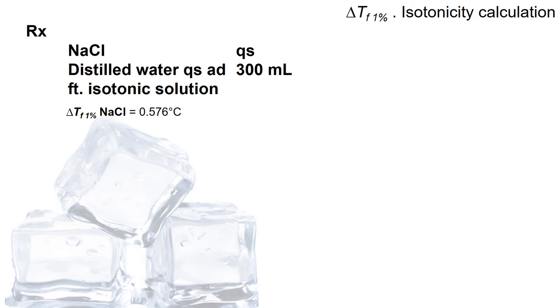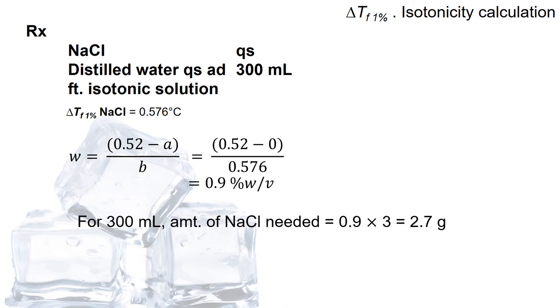First, we look at this simple example. We have to prepare 300 mL of an isotonic sodium chloride solution. Given that the freezing point depression value for 1% of sodium chloride is 0.576. By using the equation, we can substitute the value inside. Since there is nothing present, so the a remains 0. For b, the things added to adjust, which is the sodium chloride, so we substitute with the freezing point depression value, and you will get 0.9%. And bear in mind that the w doesn't reflect the weight in terms of grams, but it actually reflects or indicates the percentage weight in volume. So for 300 mL, the amount of sodium chloride needed is 2.7 grams.